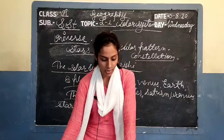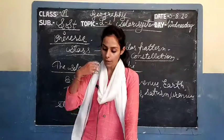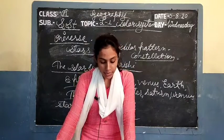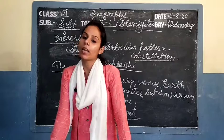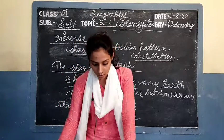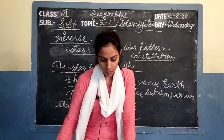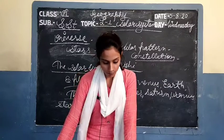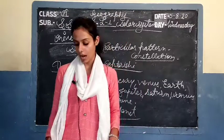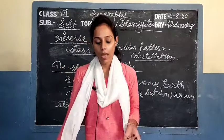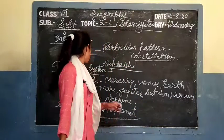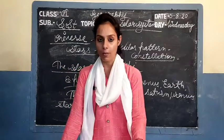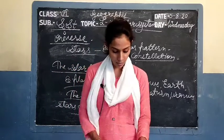Stars are numerous and uncountable in number, while planets are limited. Previously it was said there were 9 planets, but in present time we know there are only 8 planets, not 9. In the next video, I will explain about planets in full detail.